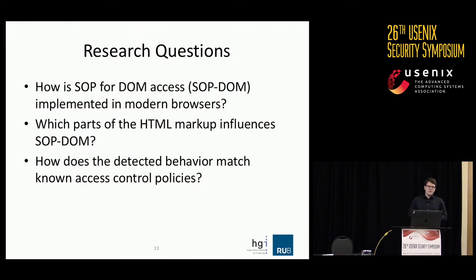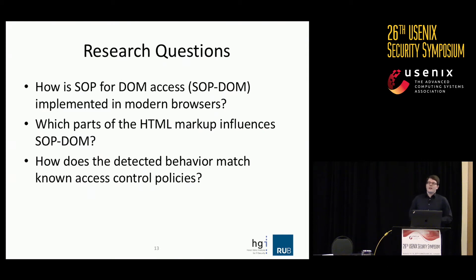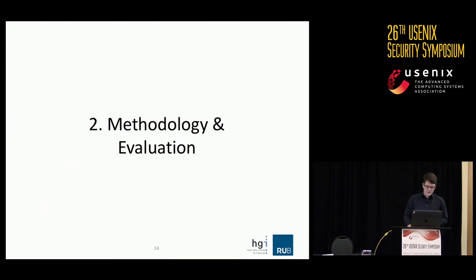So we asked ourselves which research questions might be interesting. Three of them: First, how is the SOP for DOM access implemented in modern browsers? Second, which parts of the HTML markup influence SOP DOM? We saw that the embedding element is a very important aspect. Third, how does the detected behavior match known access control policies? We thought it would make sense to have a formal model using discretionary or role-based access control.